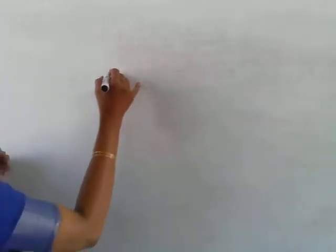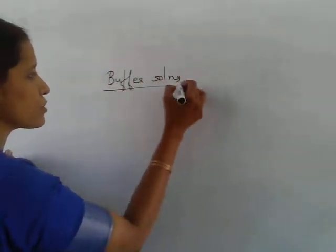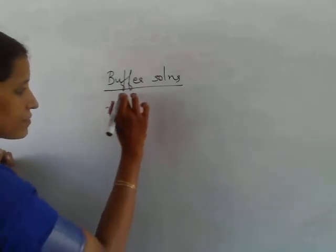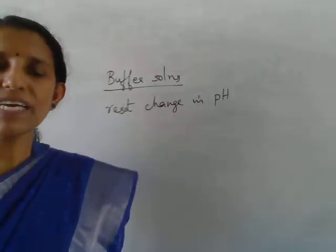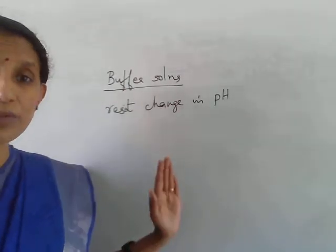Normally, solutions having a definite pH will vary on dilution. If you dilute the solution, its pH will change. If you add a small amount of acid or alkali to a solution, its pH will also change. But there are solutions that can be made such that their pH value remains constant even after dilution or even after the addition of small amounts of acid or alkali. Such solutions are called buffer solutions.